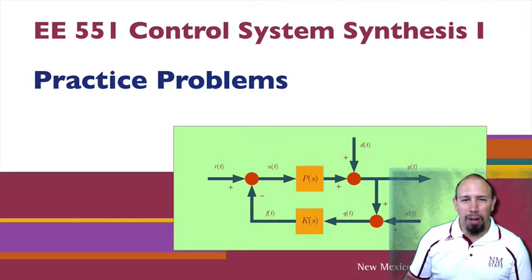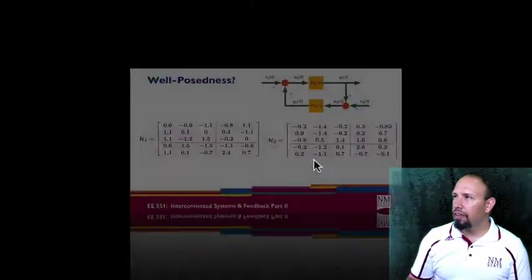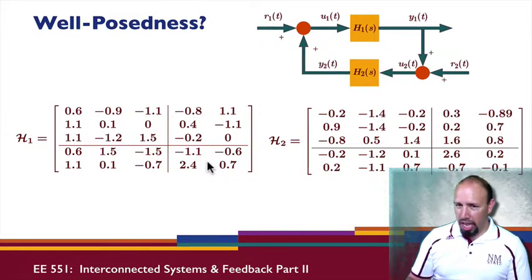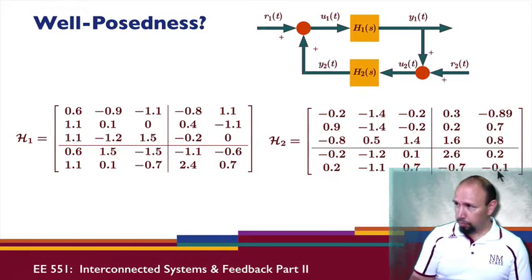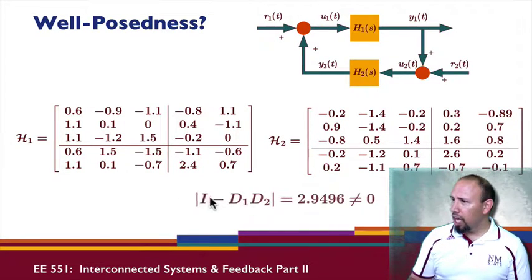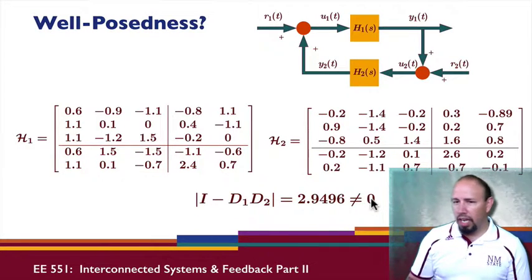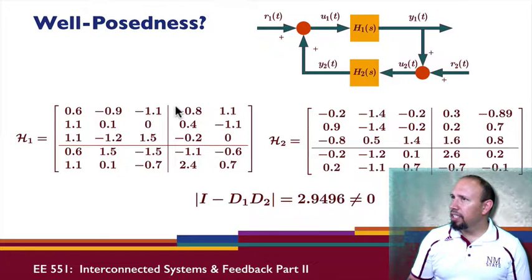All right, practice problems. We first start off looking at the well-posedness of this system. I have two systems H1 and H2, here's the system matrices for both of those. Here's D1, here's D2. We can compute I minus D1 D2 determinant, and when we do, we get this quantity which is not zero. So this system is in fact well posed.